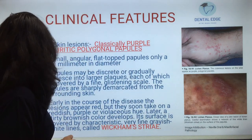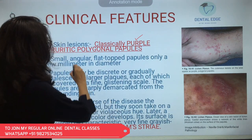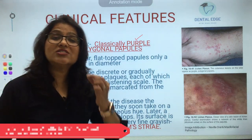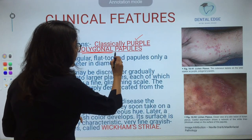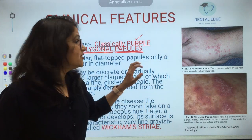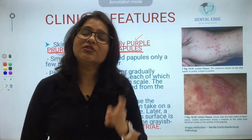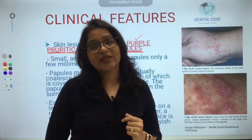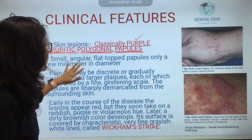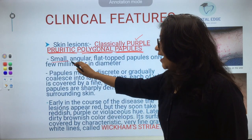The skin lesions of lichen planus are classically described as purple, pruritic (meaning they cause itching), polygonal (many-sided), papules. They can be small and angular.